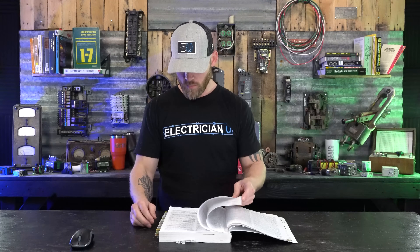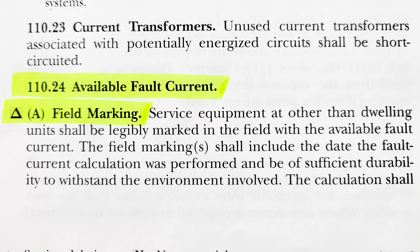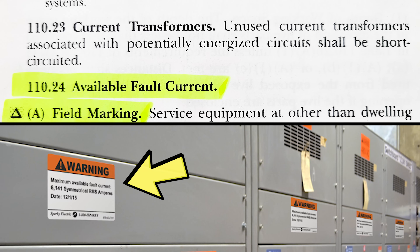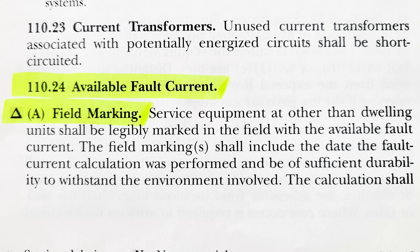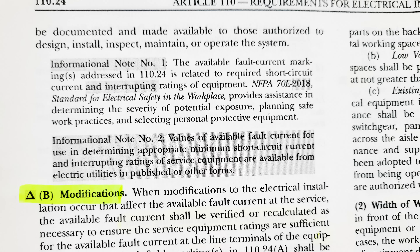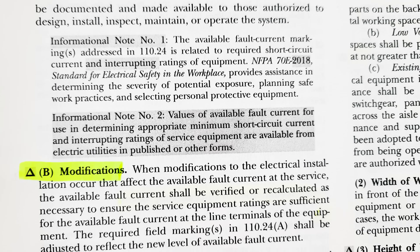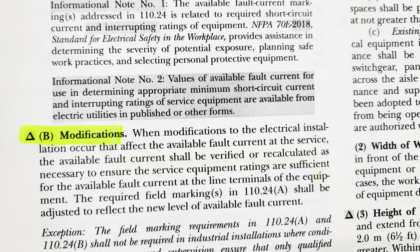NEC 110.24 covers available fault current and field marking of panels. Section 110.24(A) states that service equipment at other than dwellings shall be legibly marked in the field with the available fault current. The marking must include the date the calculation was performed and be of sufficient durability for the environment. The calculation shall be documented and made available to those authorized to design, install, inspect, maintain, and operate the system. Section (B) requires that any modifications to the service also require updating the AFC calculation and date.